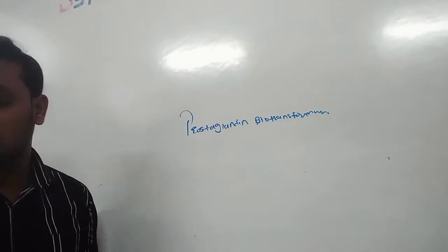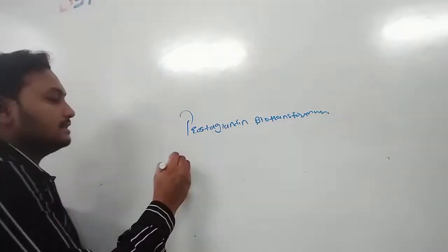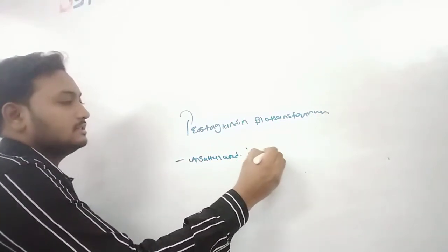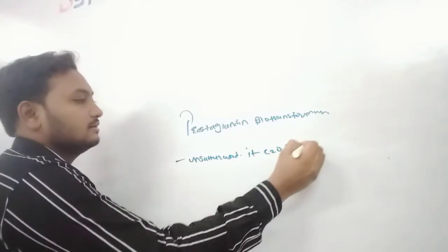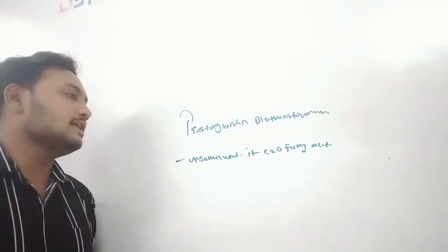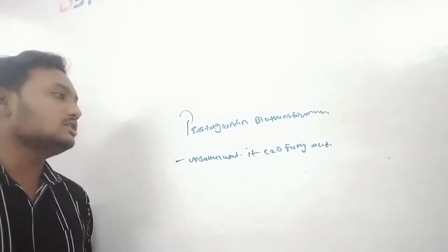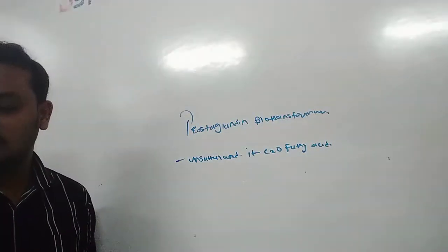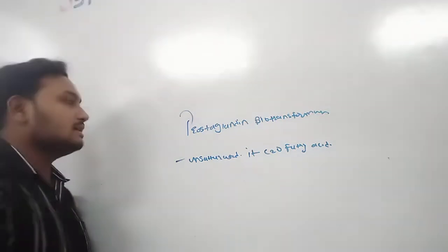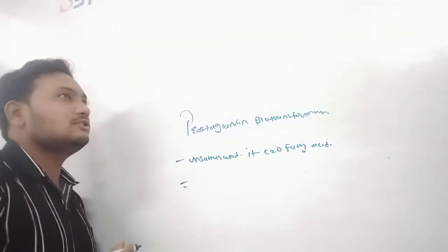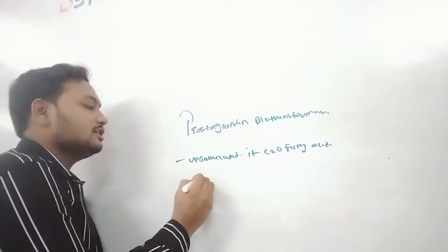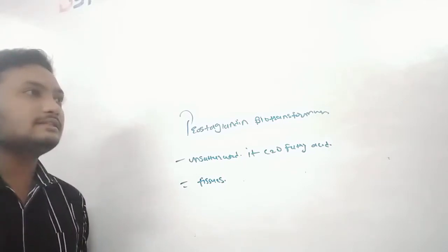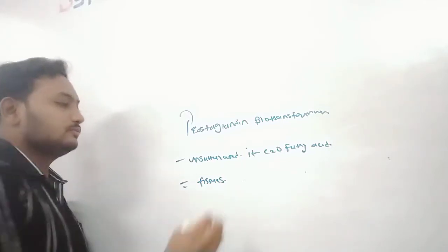Prostaglandins are the unsaturated C20 fatty acids. It contains a 20-carbon long chain and it is unsaturated in nature. So these function as tissue hormones — prostaglandins are present in tissues and act as the hormones of tissues.